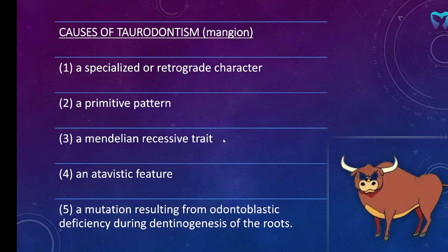There is one other cause mentioned by Hemmer. According to Hemmer, the Hertwig epithelial sheath, which guides root formation, invaginates at an improper horizontal level. So this is another reason for taurodontism.